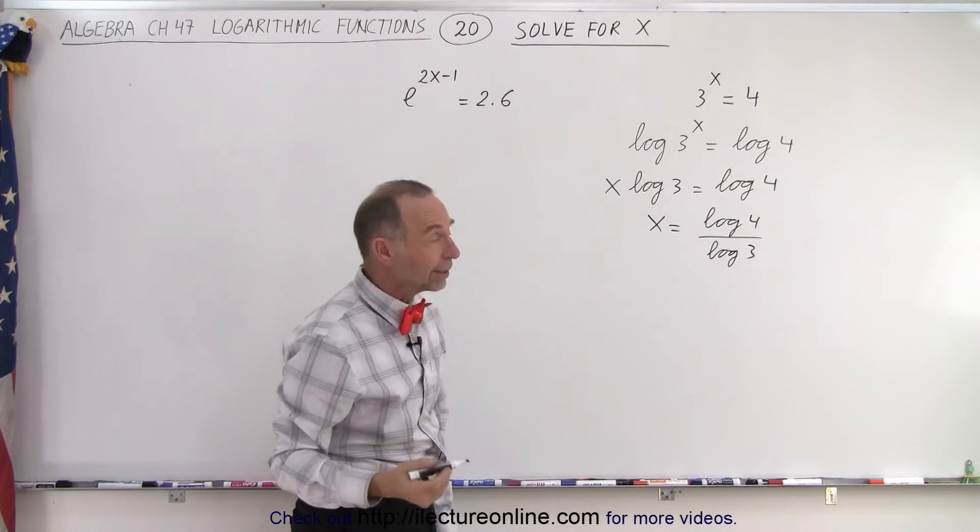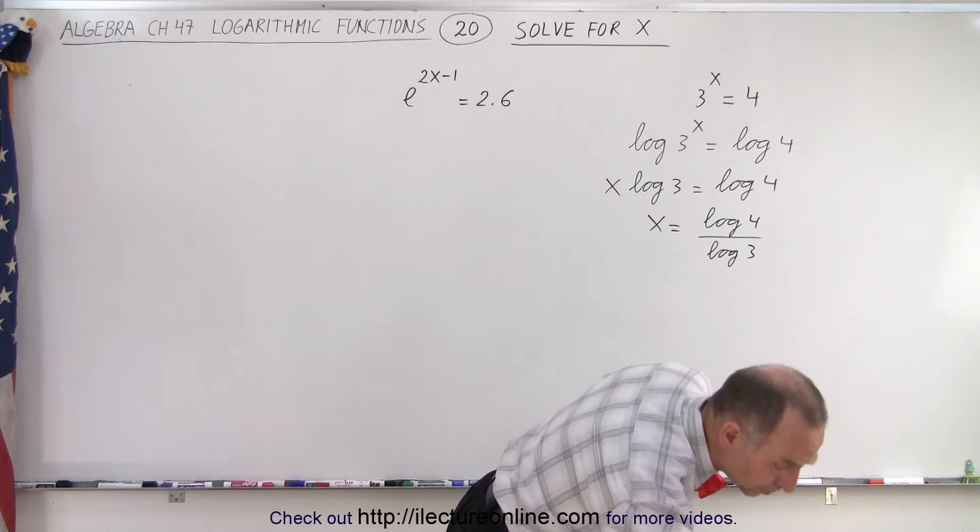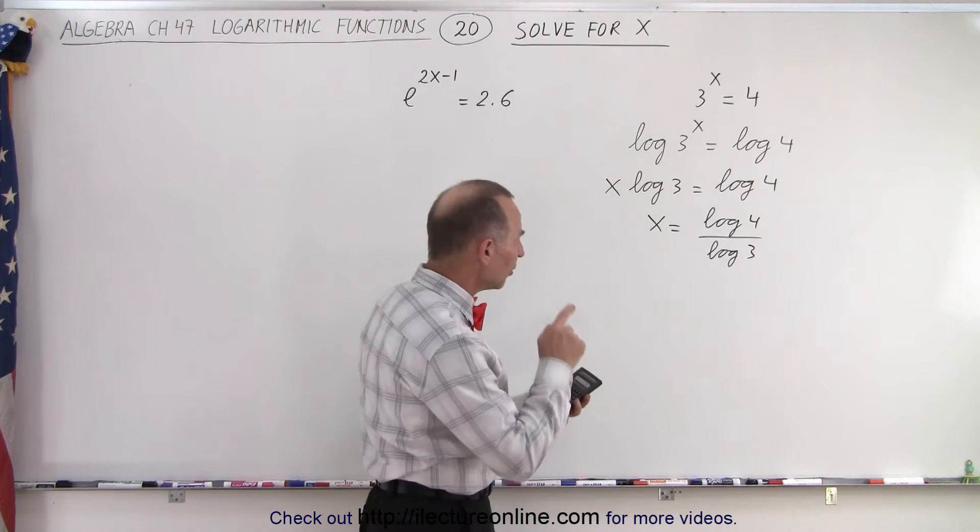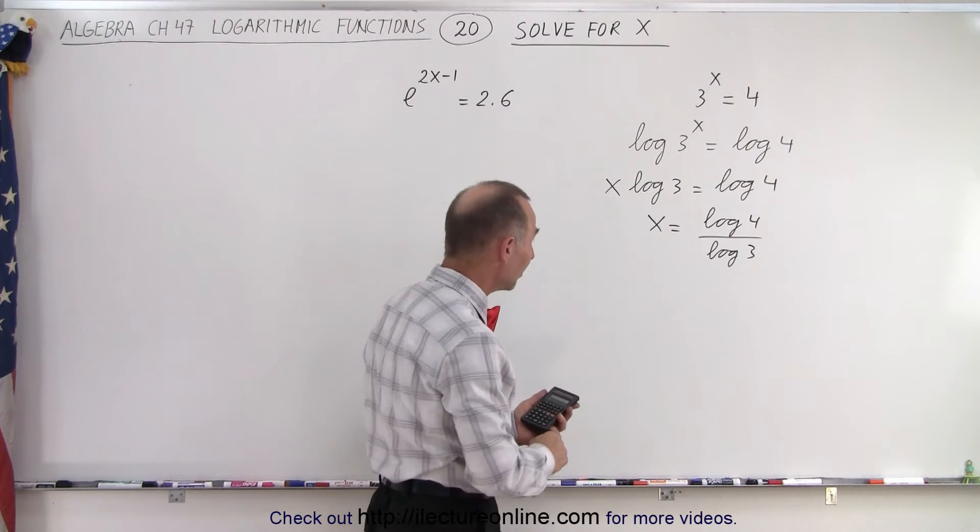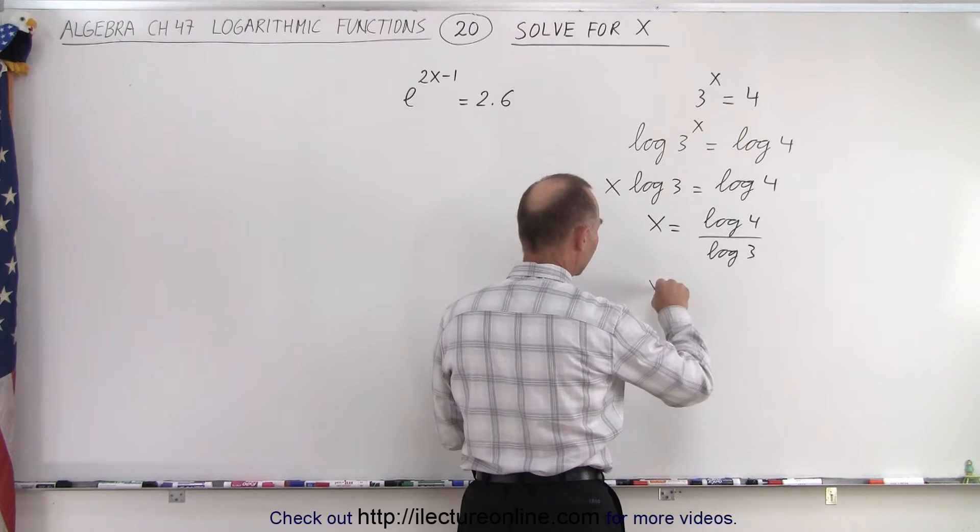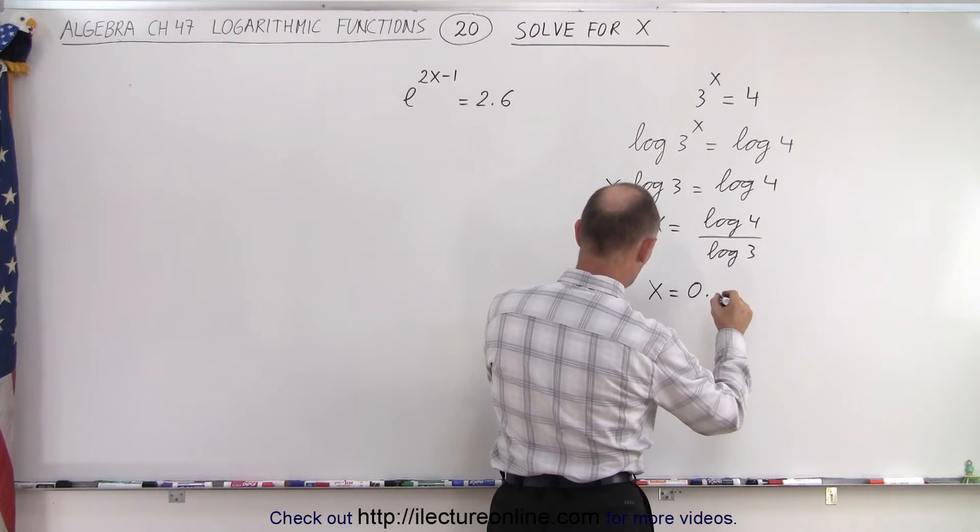All we have to do is grab a calculator and calculate log(4) and log(3). You plug in the number 4, push the log button, and you get 0.60206.